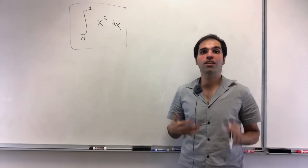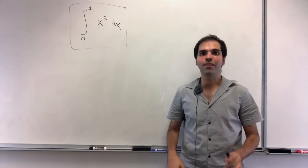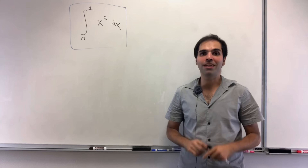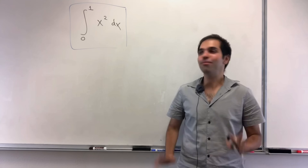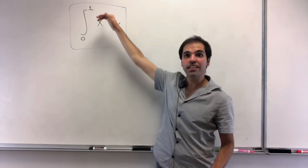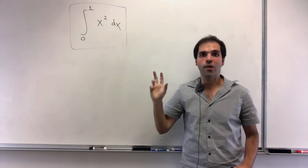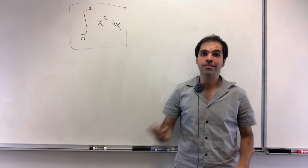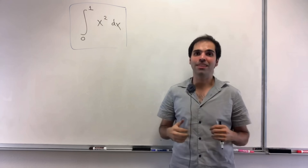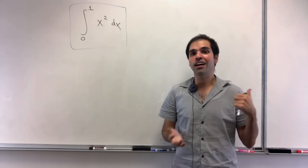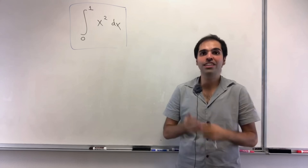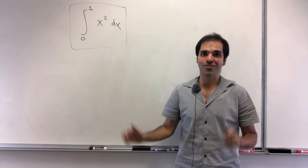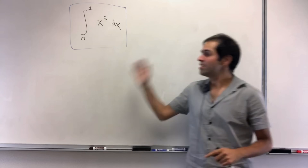Thanks for watching. Today I want to solve a problem that I promised BlackPen RedPen eight months ago that I would do. I want to find the integral from zero to one of x squared using four ways depending on your academic status: the high school way, the college way, the math major way, and finally the grad school way. So let's start with the high school way.